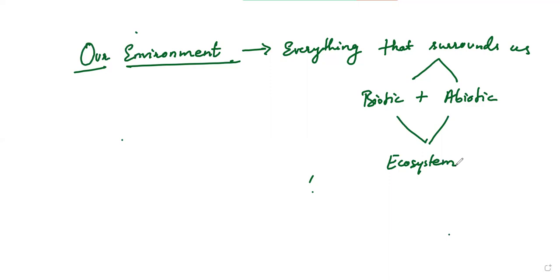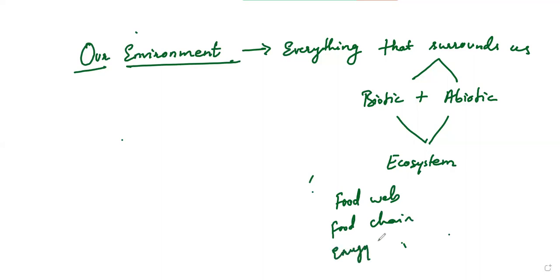Whenever there is an interaction between the biotic as well as abiotic components, it forms an ecosystem. In this ecosystem, we are going to see about various terms such as food web or food chain and energy transfers. These are some of the terms we'll be seeing in this chapter.